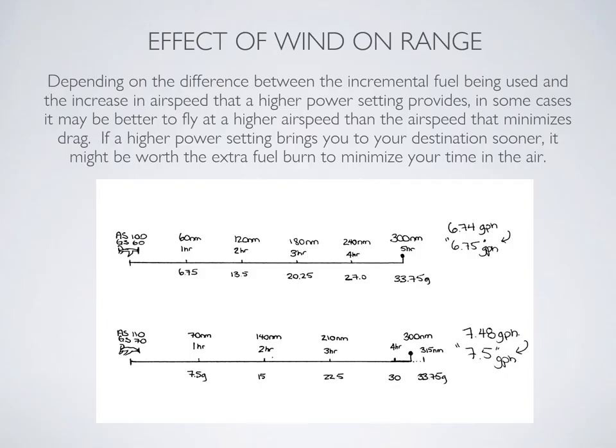In the example shown, if you're fighting a headwind of 40 knots and your destination is 300 nautical miles away, you actually get better range if you select a higher airspeed despite the extra fuel burn, because you'll reach your destination sooner and have fuel to spare. An airspeed only 10 knots faster with a fuel burn of 7.5 gallons instead of 6.75 gallons actually gives you better range.